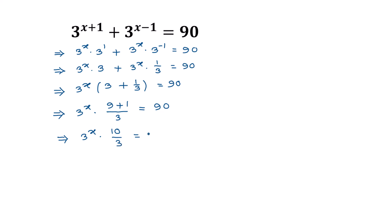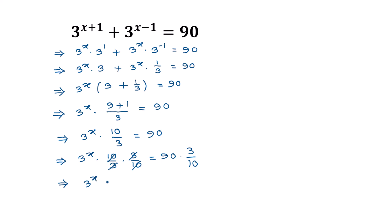So 3 to the power x times 10 over 3 equals 90. Now multiplying both sides by 3 over 10, the 3s cancel and the 10s cancel on the left side, giving 3 to the power x equals 90 divided by 10, which is 9 times 3, equal to 27.